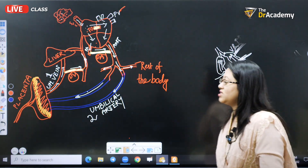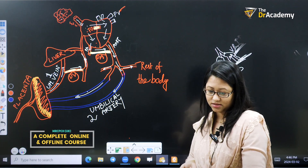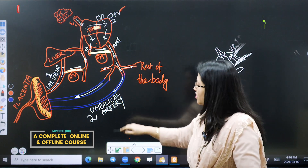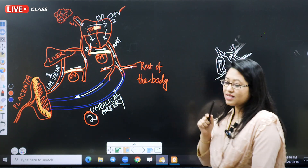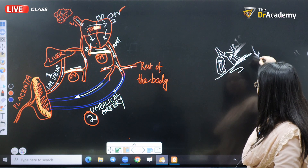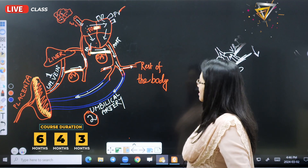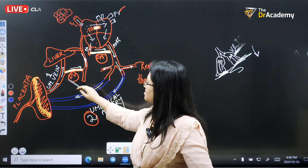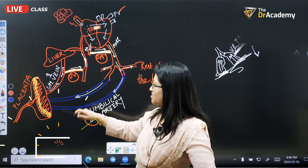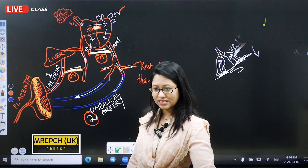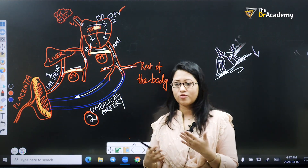This entire fetal circulation must be memorized and understood. Without understanding it, it will be very difficult to answer exam questions. This fetal circulation is very important. They will confuse you with terms like: 'In fetal life, the vascular resistance is low' — that is false, it is high. Ductus venosus carries blood from the umbilical vein to the inferior vena cava. If a question says it goes to the superior vena cava, that is wrong.